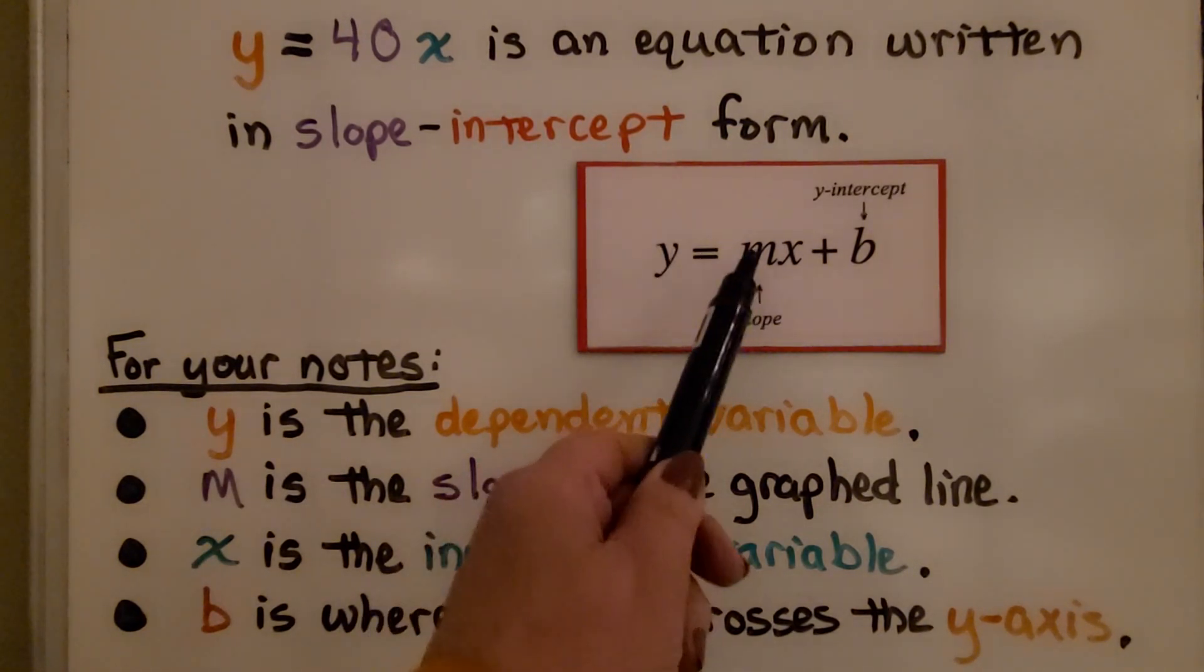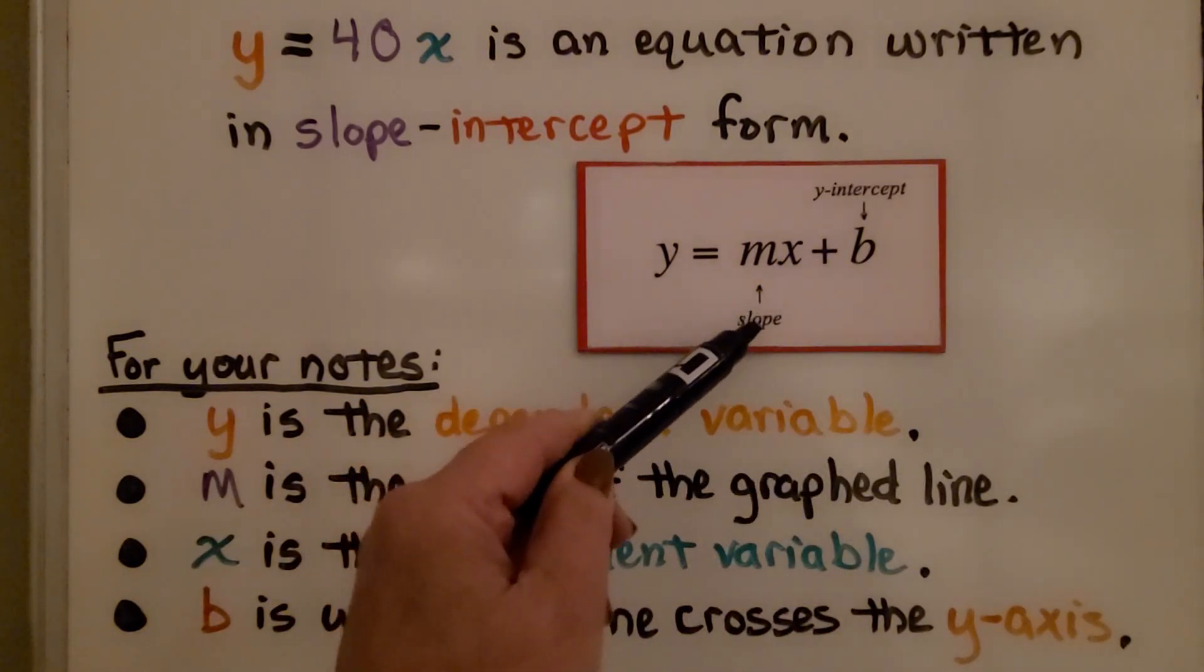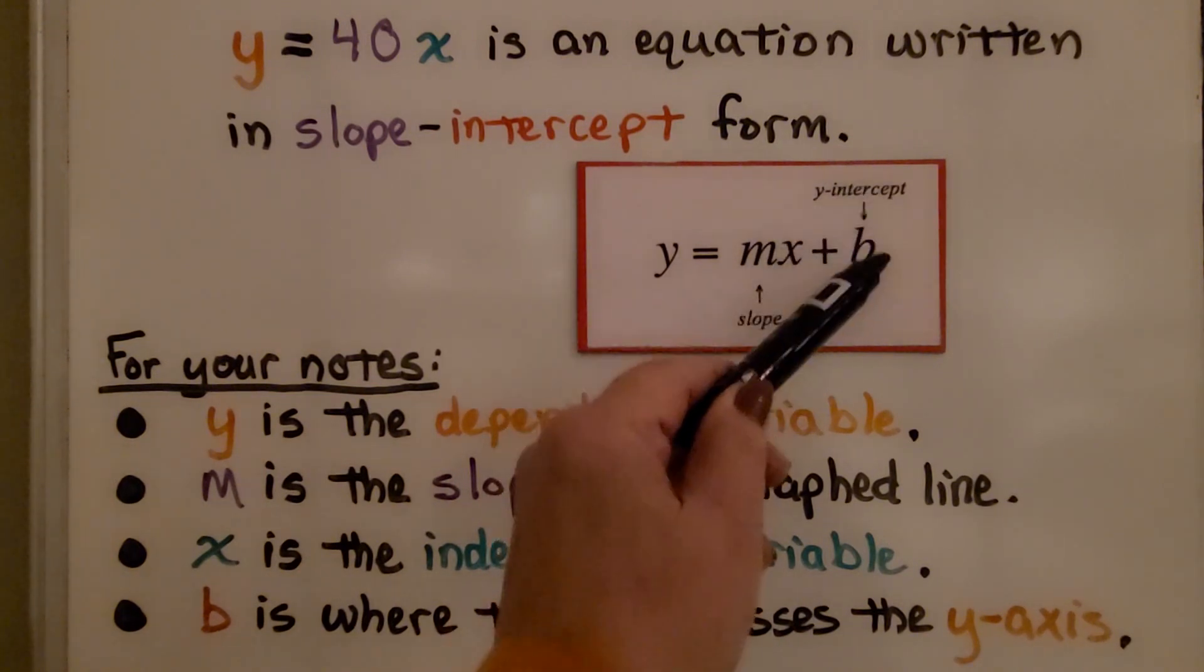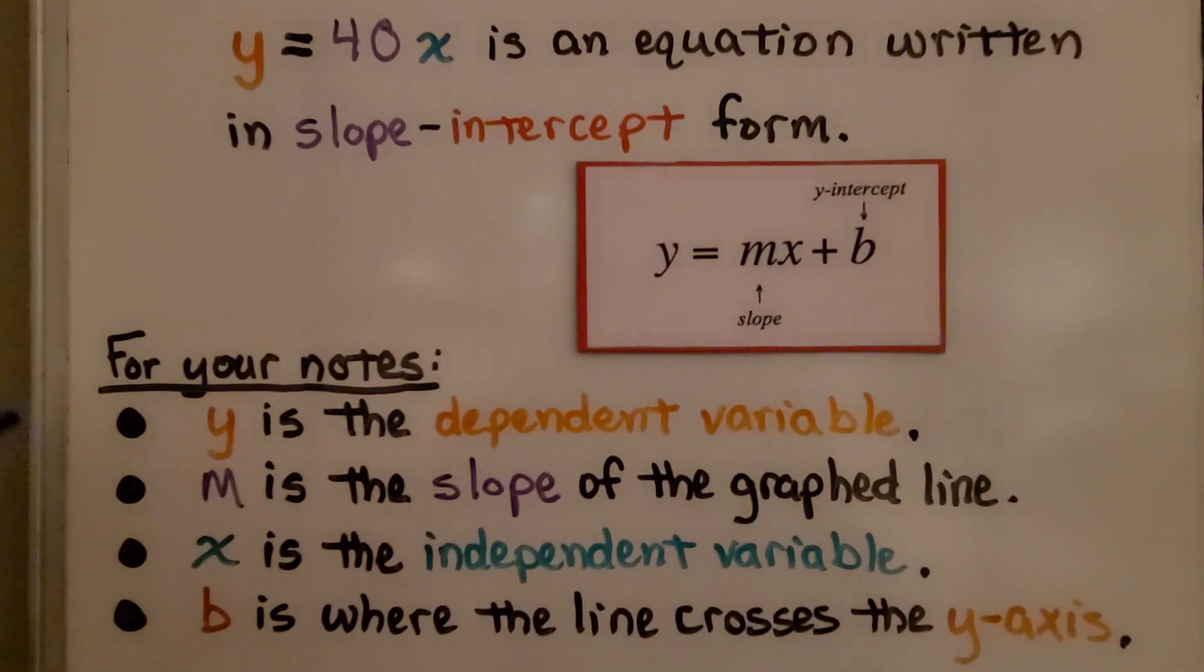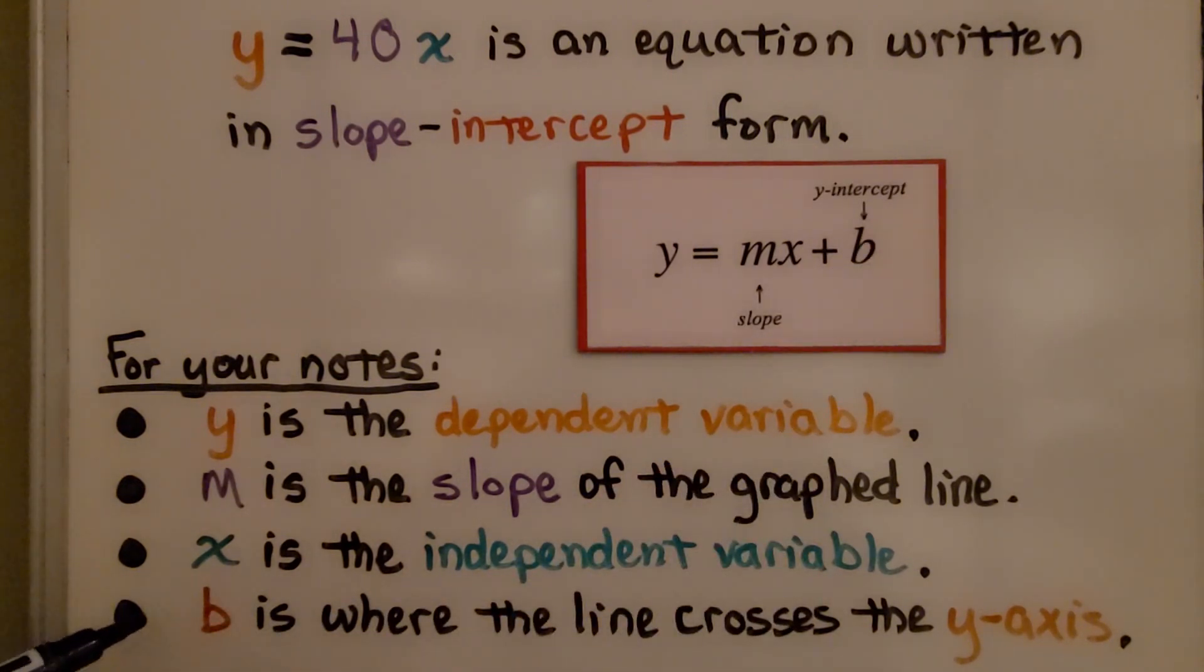It's y equals mx plus b. The m represents the slope, and the plus b is the y-intercept. For your notes, this is important to write down. y is the dependent variable, m is the slope of the graphed line, x is the independent variable, and b, the y-intercept, is where the line crosses the y-axis on the graph.